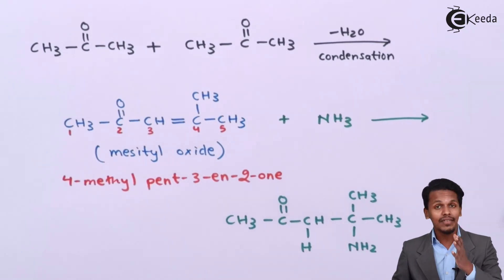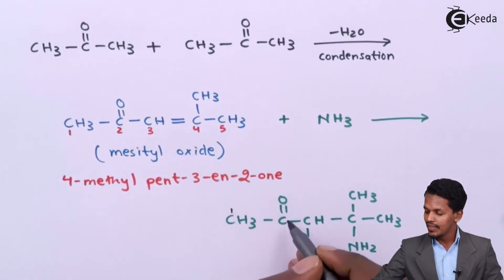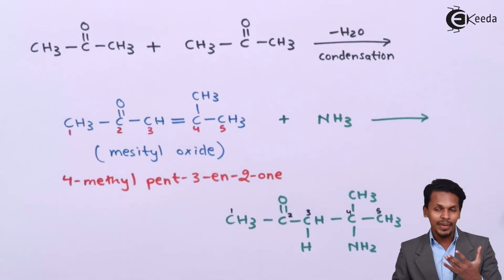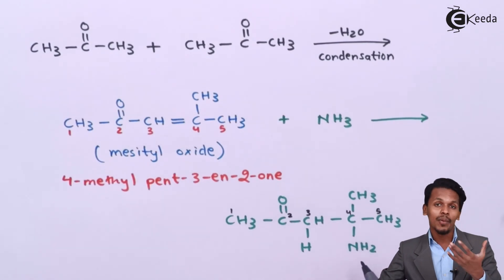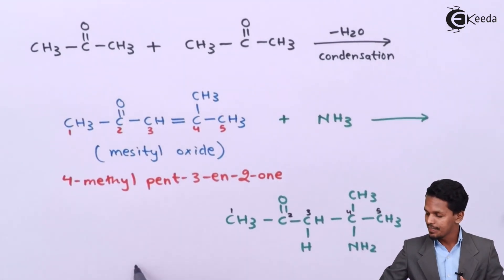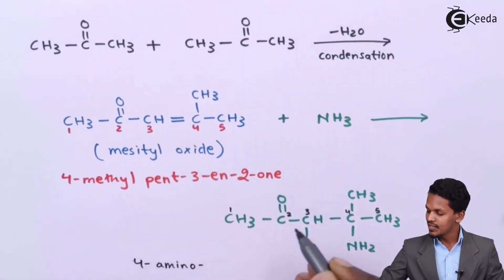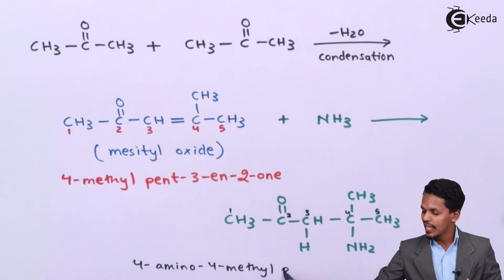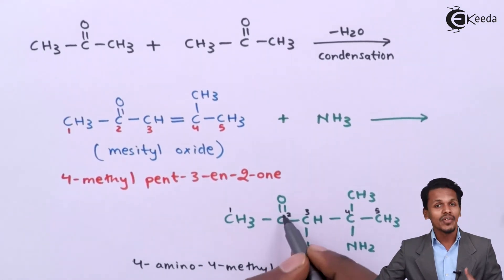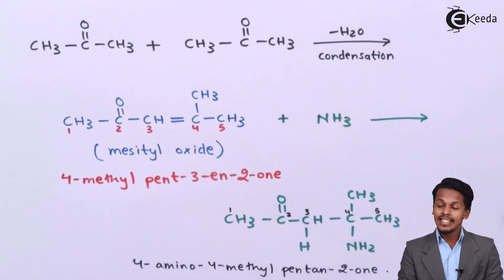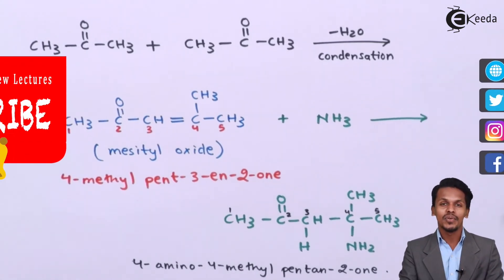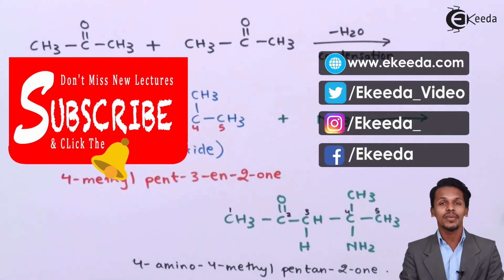For the IUPAC name of the product: there are 5 carbons in the straight chain, and on carbon 4 there is an amino group, and on carbon 2 there is a ketone group. So the name is 4-amino-4-methylpentan-2-one. That is what we have discussed about the action of ammonia on aldehydes and ketones — the different reactions and processes. Thank you friends for watching this video, I hope you have understood it clearly. Please subscribe to the Ikita channel, thank you so much.